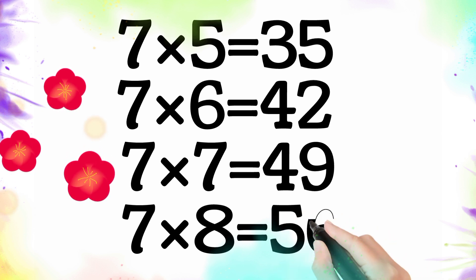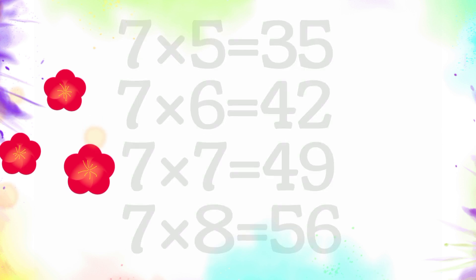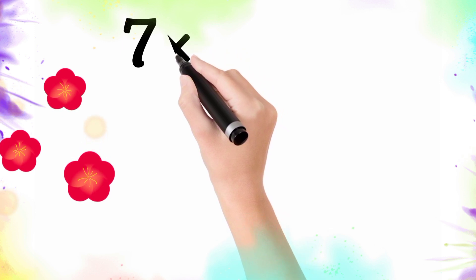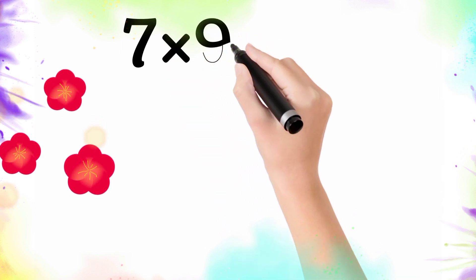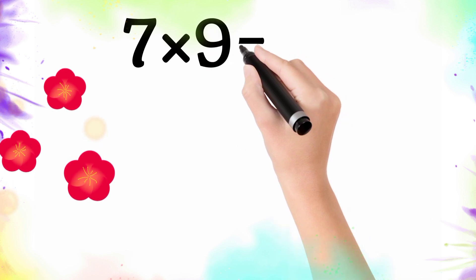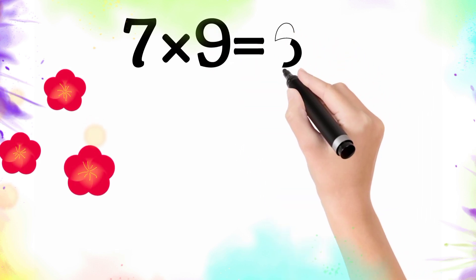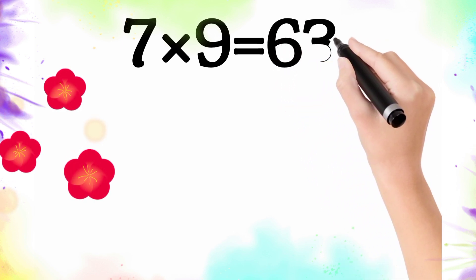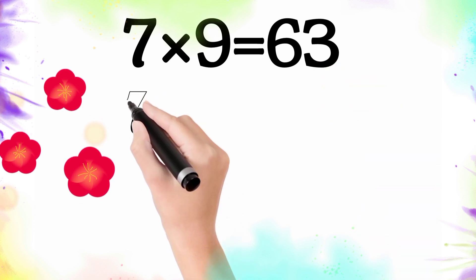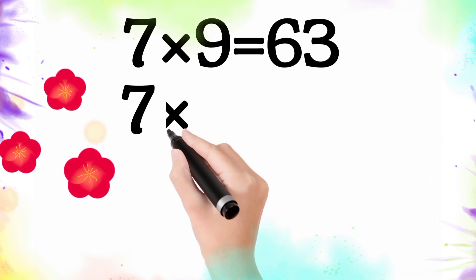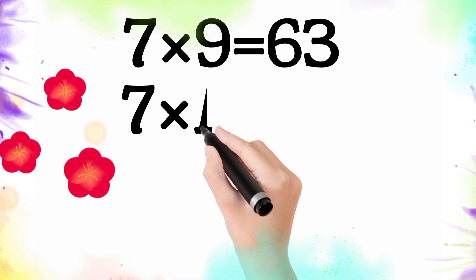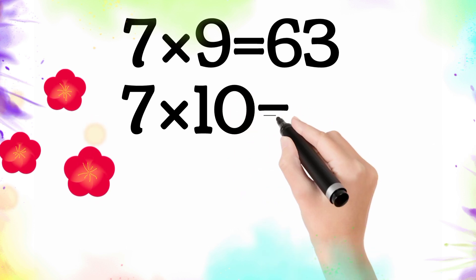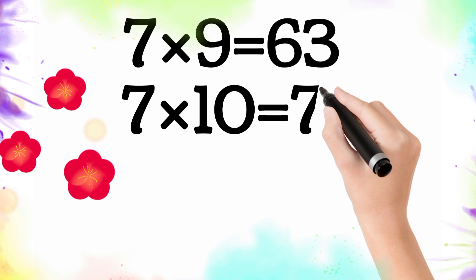Seven multiply by nine is equal sixty-three. So seven nine the sixty-three. Seven multiply by ten is equal seventy. So seven ten the seventy.